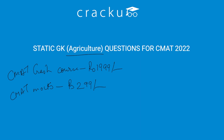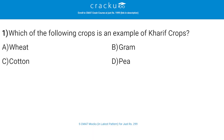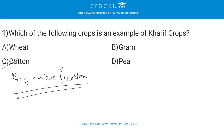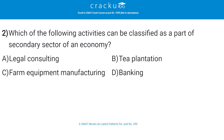Let's start with the first question: which of the following crops is an example of kharif crops? The correct answer is C — cotton. The major kharif crops are rice, maize, and cotton.